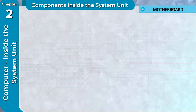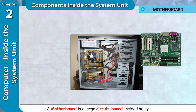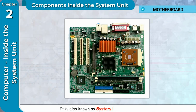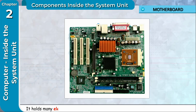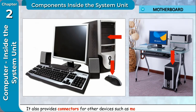Motherboard: A motherboard is a large circuit board inside the system unit. It is also known as system board or main board. It holds many electronic components such as the processor, CPU, and main memory. It also provides connectors for other devices such as mouse, keyboard and monitor.